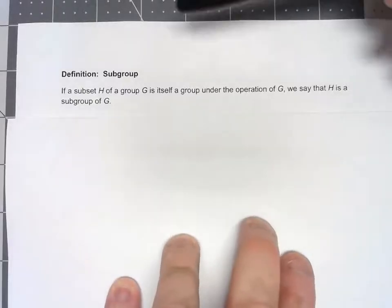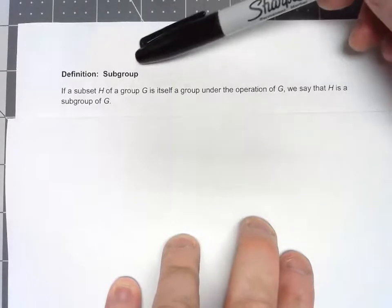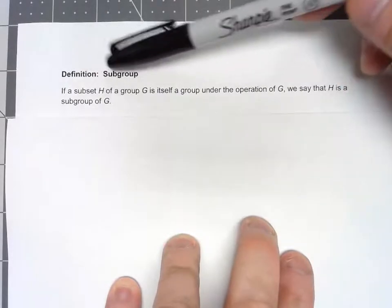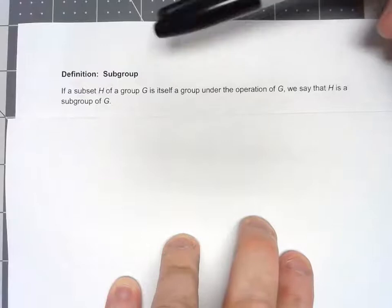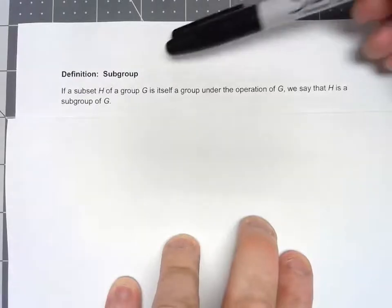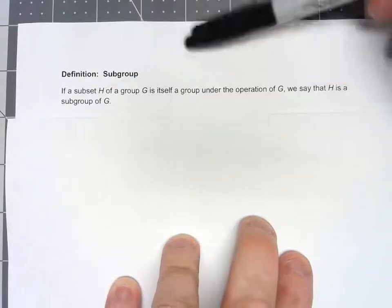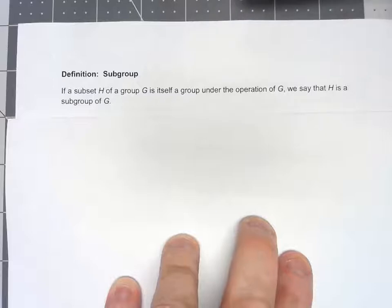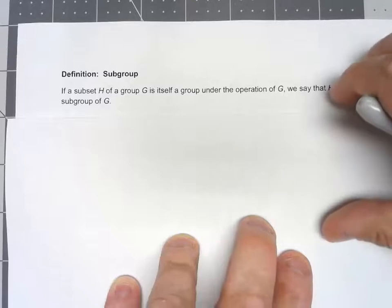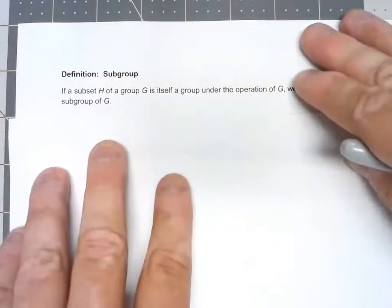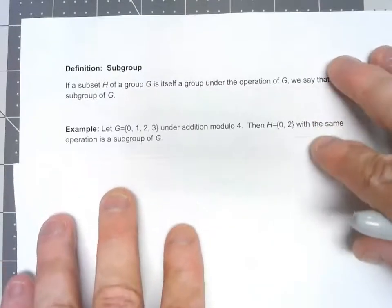Let's start with a definition. We're going to call a subgroup a subset of a group that is itself a group. So if you take part of a group and it still has all the properties of a group, we'll call it a subgroup. That's fairly simple, but let's take a look at a couple of examples.